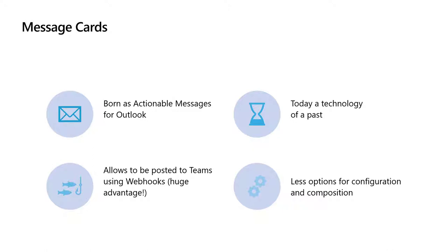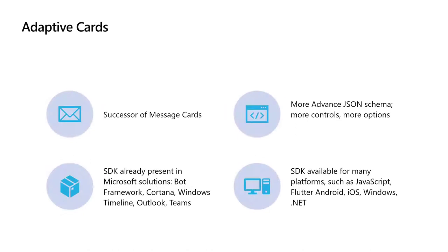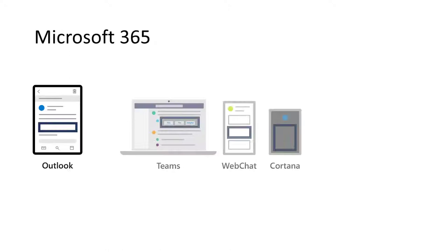First, message cards. They were created on top of actionable messages back in 2017 or 2018, because David Klo was working for the Exchange team, so that technology was somewhat a legacy he brought in. But it's now a technology that has passed, so don't use it. Adaptive Cards was created as a successor of message cards — it inherited all the best functionalities. Plus, thanks to over two years of intensive work on this technology, it is now a much more advanced project with more features and capabilities, and you'll see how it works in a productive environment.